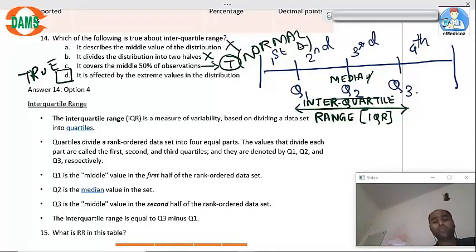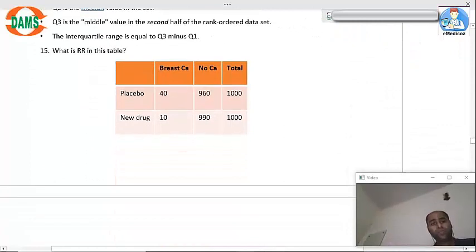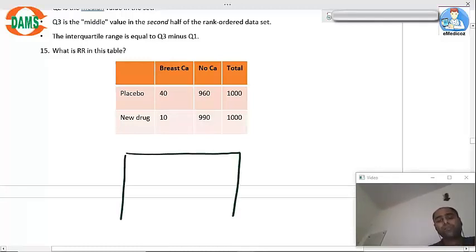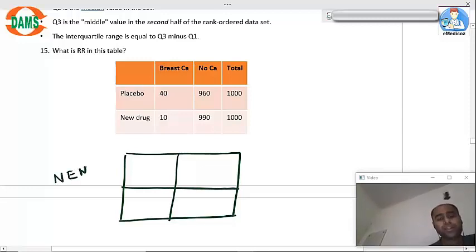Question 15: What is the relative risk of this table? Now whenever you are given a question to calculate relative risk, you should always ensure one thing that is you are going to make this table. Yes, and always remember the new drug should be above and the placebo should be next.